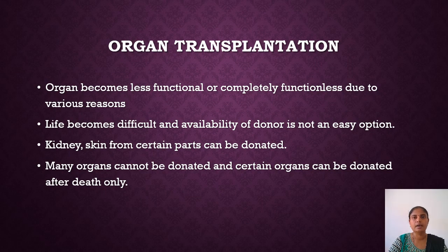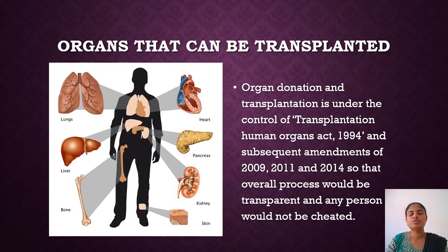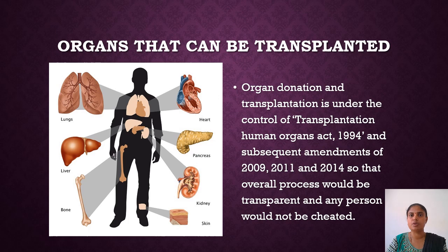Organs like heart and eyes can be donated after death only. This slide shows the organs that can be transplanted: heart, pancreas, kidney, skin, lungs, liver, and bones. Organ donation and transplantation comes under the Transplantation of Human Organs Act 1994 and subsequent amendments of 2009, 2011, and 2014, so that the overall process is transparent and no person is cheated.